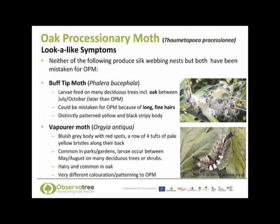Two further native caterpillars do not produce silk webbing nests but have both been mistaken for oak processionary moth. The buff-tip moth larvae feed on many deciduous trees including oak between July and October — later than the oak processionary moth larvae. They are very hairy but have a distinctly patterned yellow and black stripy body. The vaporer moth is very common in parks and gardens, with caterpillars occurring between May and August on many deciduous trees and shrubs. They are hairy and common on oak trees, but very differently patterned to oak processionary moth and should not be confused.